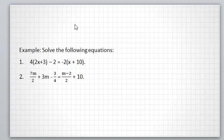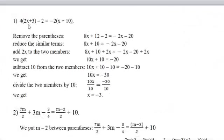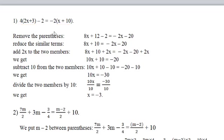Now I will give you some examples about solving equations. First equation: 4 times (2x plus 3) minus 2 equal to minus 2 times (x plus 10). Remove the parentheses using the distributive property: 4 times 2x gives 8x, and 4 times 3 gives 12, so we get 8x plus 12 minus 2 equal to minus 2x minus 20, since minus 2 times 10 equals minus 20.